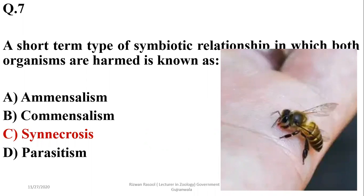Amensalism, option A, is a relationship in which one organism is harmed while the other is neither benefited nor harmed — for example, an ant being stepped on harms the ant but has no effect on the person. In commensalism, one organism is benefited while the other is neither harmed nor benefited. Parasitism is also well known. The correct option here is C (synnecrosis).